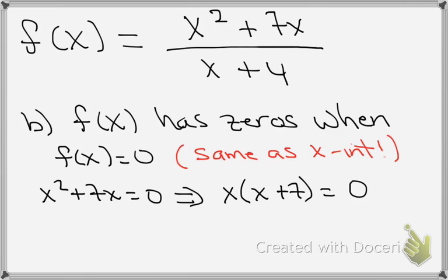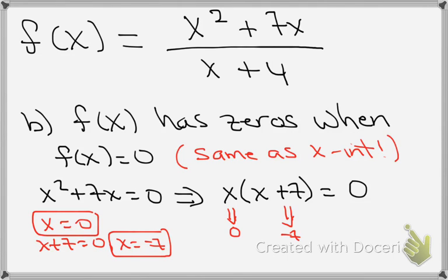Remember, to solve two factors multiplied together equal to zero, you set each one equal to zero. So x would be zero, and then in x plus 7, that factor, the x would be minus 7. The first one is certainly x equals zero. The second one to solve is x plus 7 equals zero, which gives us x equals minus 7. So we have zeros for this function which are x equals zero and x equals minus 7.